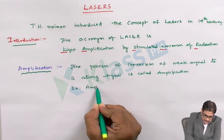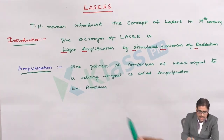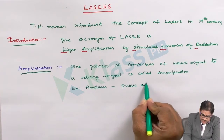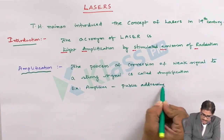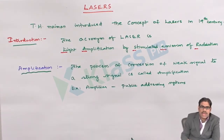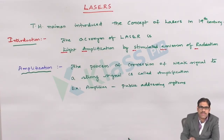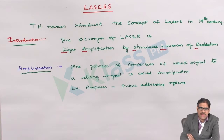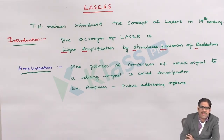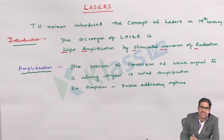We make use of Amplifiers, especially in public addressing systems. Its usage is better understood in terms of public addressing systems. Normally, the intensity of sound emitted by a human being is of very much lower order. If you are in a particular auditorium or in a stadium and it has to be reached to many people, we go for a device called an Amplifier. Here, the intensity of the sound signal, which is supposed to be weak, gets converted to a strong signal. That is the basic characteristic property of an Amplifier.